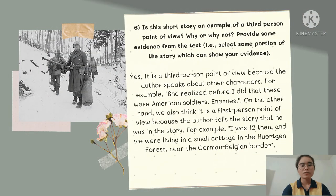Question 6: is this short story an example of third person point of view, and why? Provide some evidence from the text. Our answer is yes, it is a third person point of view because the author speaks about other characters. For example: 'She realized before I did that these were American soldiers, enemies.' On the other hand, we also think it contains a first person point of view because the author tells the story as a participant. For example: 'I was 12 then and we were living in a small cottage in the Horken Forest near the German-Belgian border.'